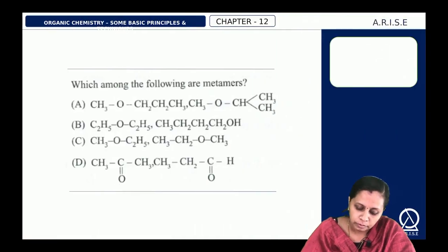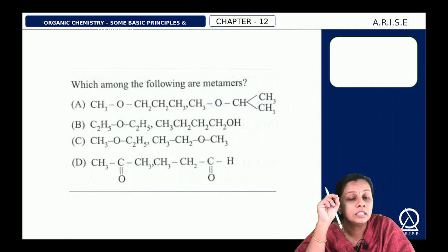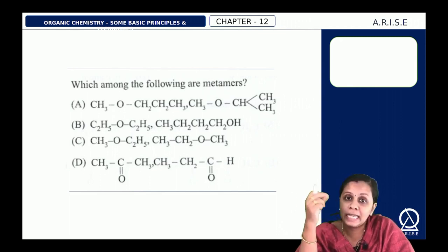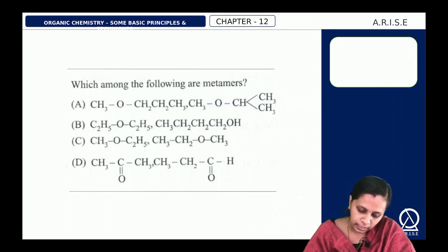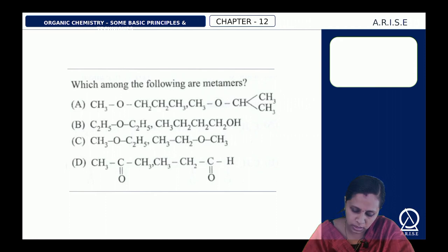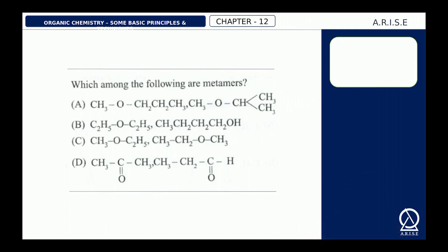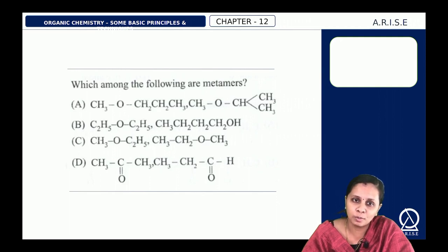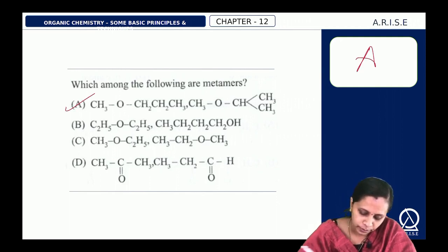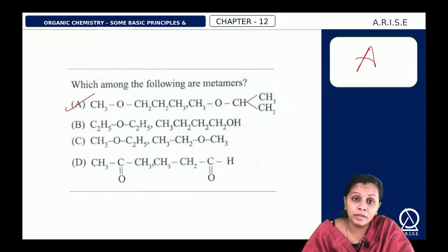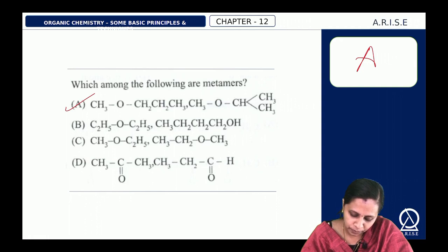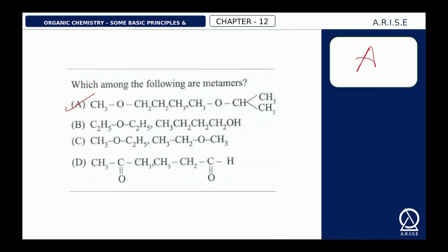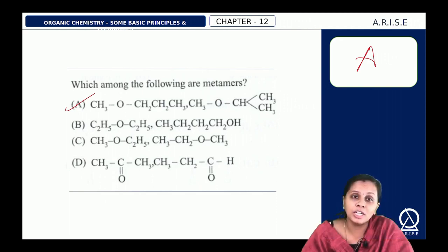Next: which of the following are metamers? Metamers have the same functional group but differ in chain lengths on either side of the functional group. Option A: CH3–O–CH2–CH2–CH3 and CH3–O–CH(CH3)–CH3 — they differ in chain length on either side of the oxygen. So option A is the answer. Option B has different functional groups. Option C compounds are identical. Option D compounds are functional isomers with different functional groups.